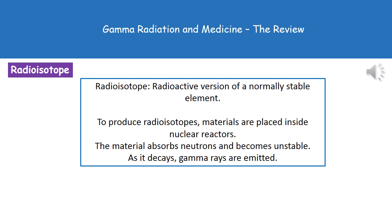In order to produce this radioisotope, we're going to place a material inside a nuclear reactor. When that material is inside the nuclear reactor, it's going to absorb neutrons, and as a result, become unstable. As it then decays, we'll emit those gamma rays, which we can then use.